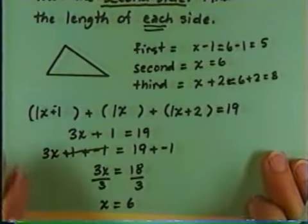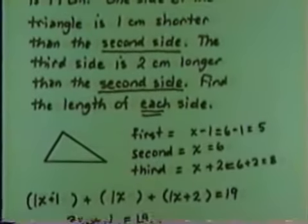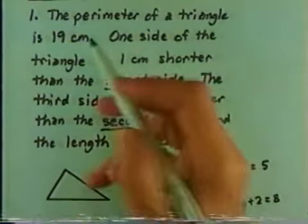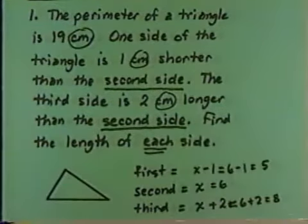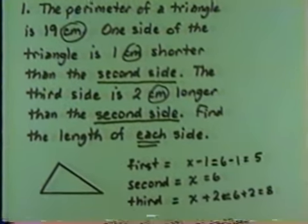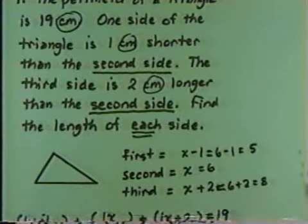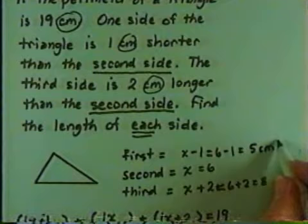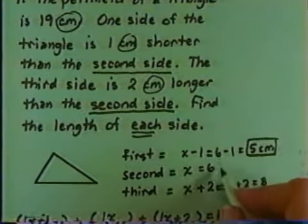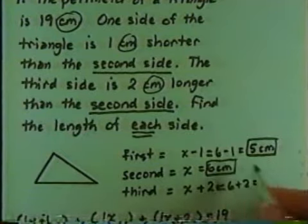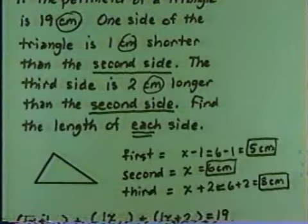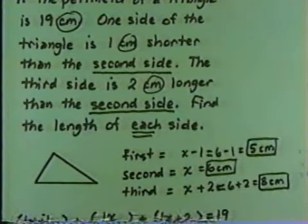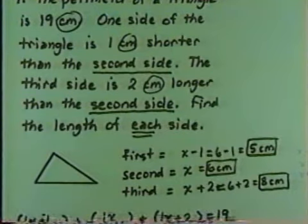But 5, 6, and 8 are what units? Back to the original problem — the perimeter is 19 centimeters. Centimeters are involved throughout. Everywhere we see a unit of measure, it's centimeters, which means all the measures here are centimeters. Without the units we have not completed the problem, but now we have our three sides: 5 centimeters, 6 centimeters, and 8 centimeters.